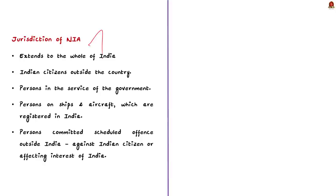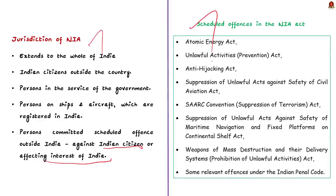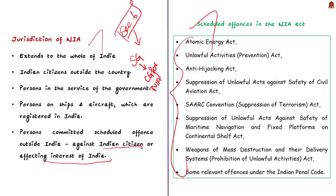The jurisdiction of the NIA extends to the whole of India and even applies to Indian citizens residing outside the country. Jurisdiction also extends to persons in the service of the government wherever they are posted, persons on ships and aircraft registered in India, and persons who commit a scheduled offense outside India that is against an Indian citizen or affects India's interests. Under Section 6 of the NIA Act, the state government can refer cases involving scheduled offenses to the central government for NIA investigation. After assessing the details, the central government can direct the NIA to take over the case, and state governments are required to extend all assistance.